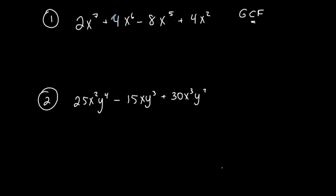Now I start with the numbers, looking at just the coefficients: 2, 4, negative 8 (ignore the negative for a second), and 4. What is the biggest number they all have in common? You might think 4, but only three of them share that. This one does not. The largest number that goes into 2, 4, 8, and 4 is 2. That is the biggest number that can go into every single coefficient.